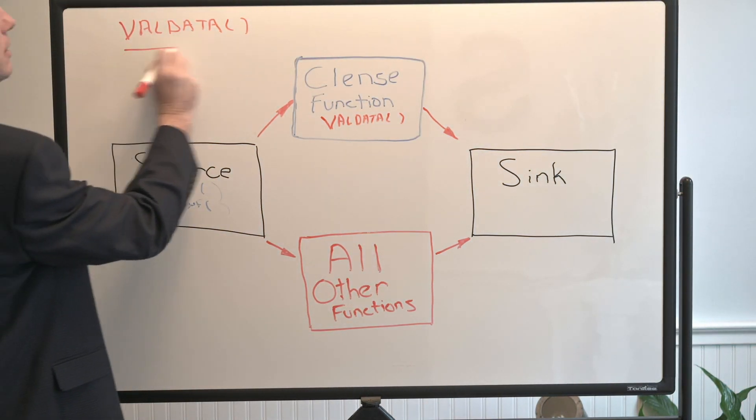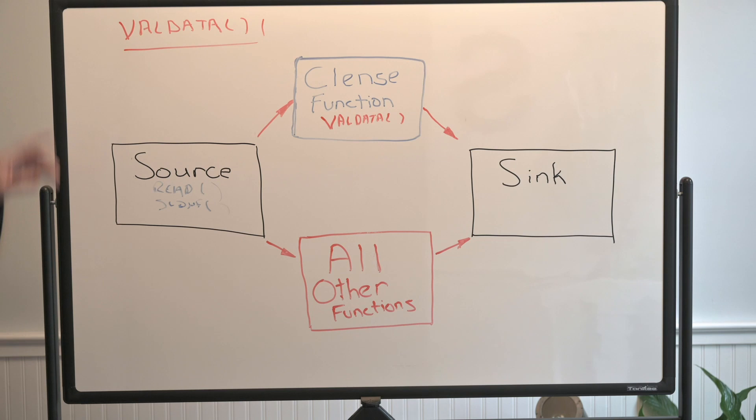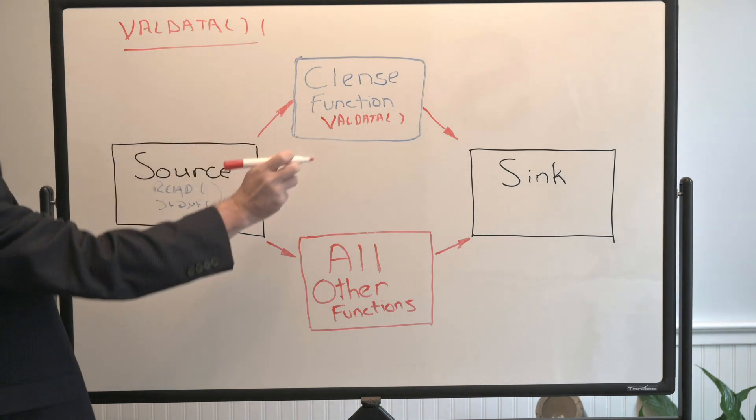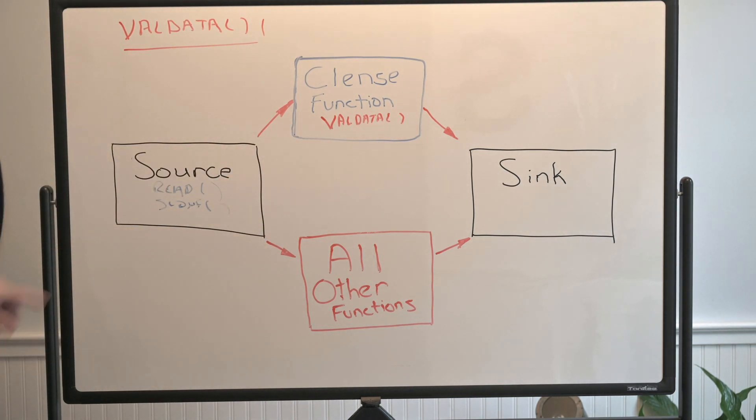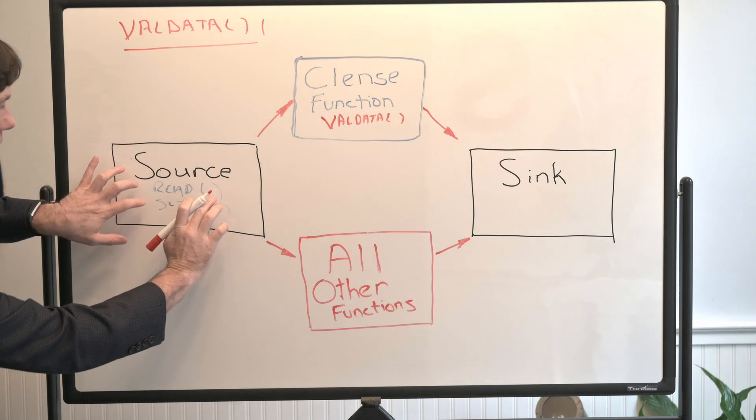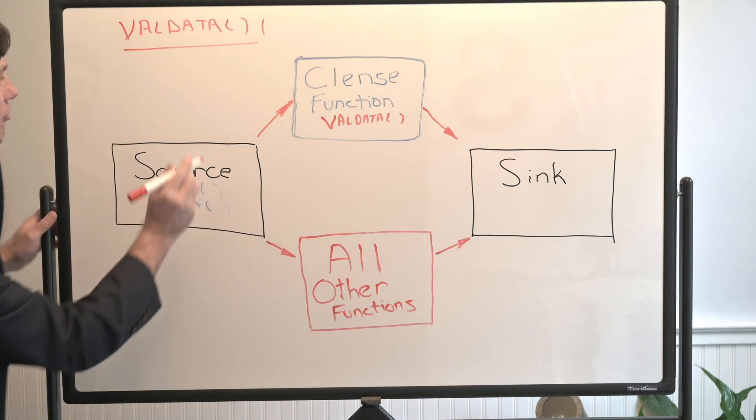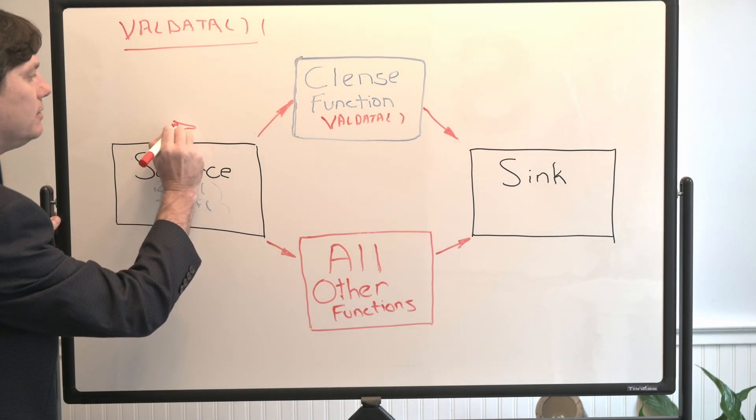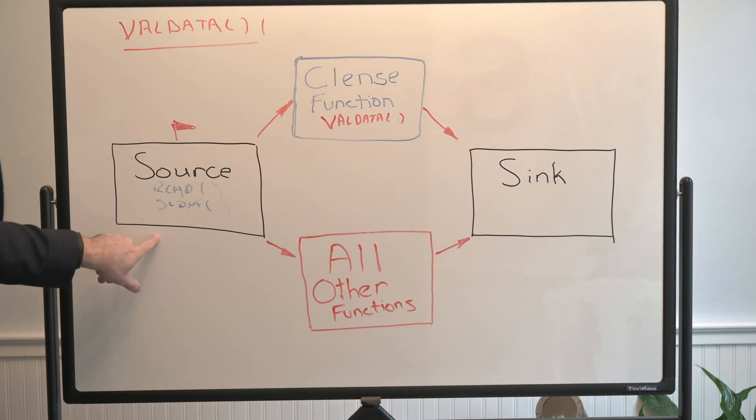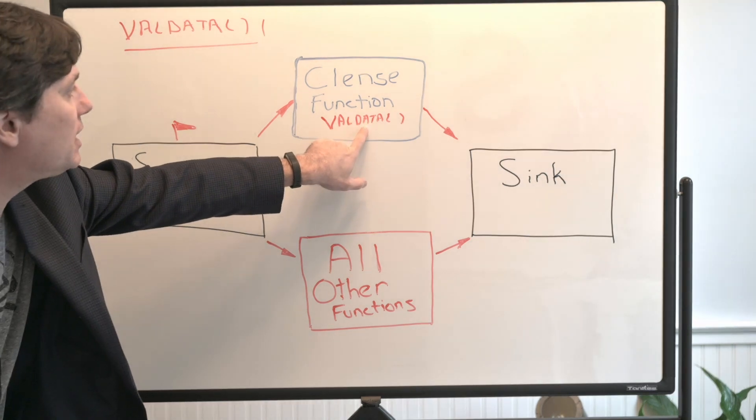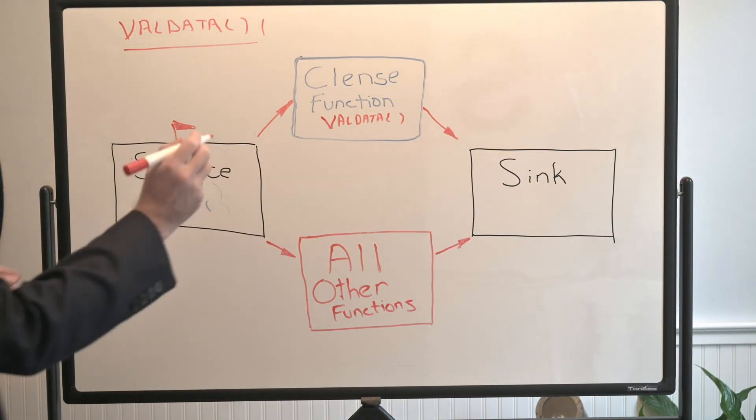In the portal, we can determine in our cleanse rule we can specify validate data or valdata. So in the portal we'll say the cleanse function is valdata. We'll say what package it's in, we're able to zero in on exactly where this valdata function exists. So our cleanse function is called valdata.